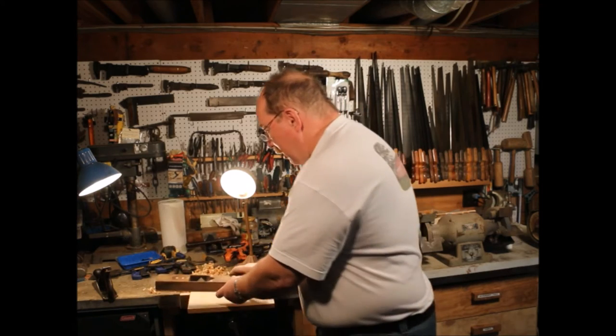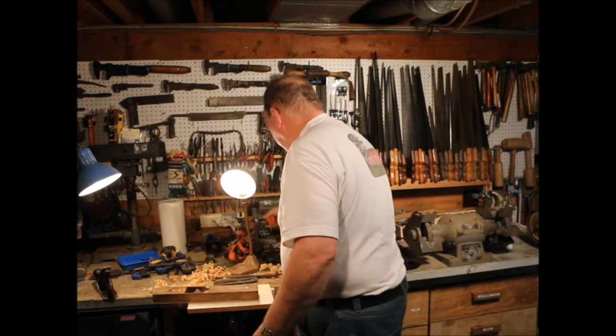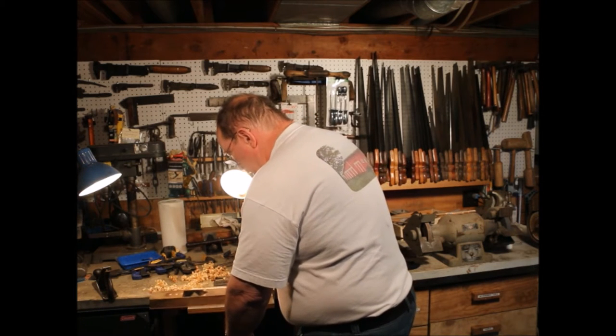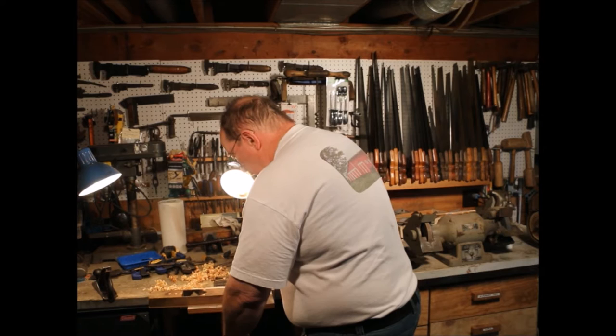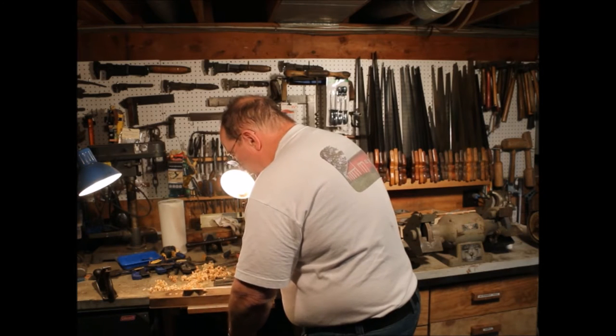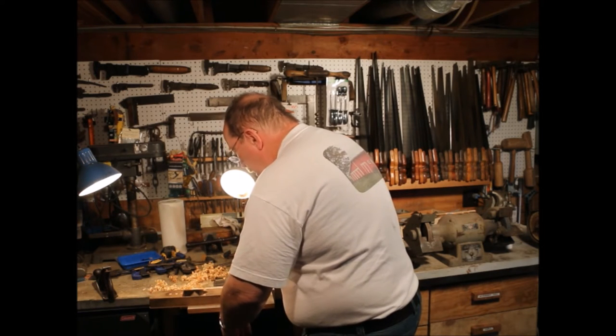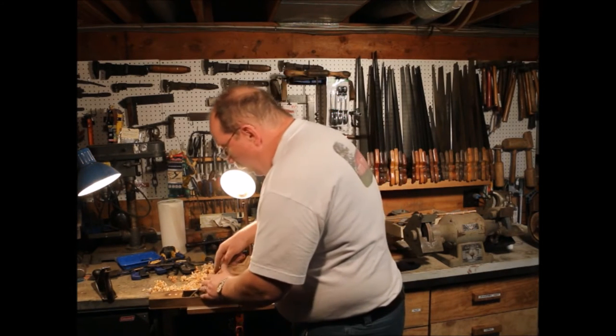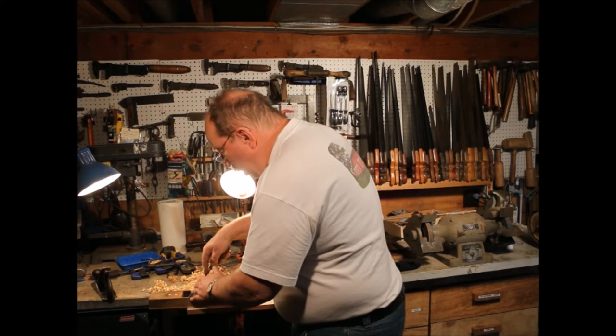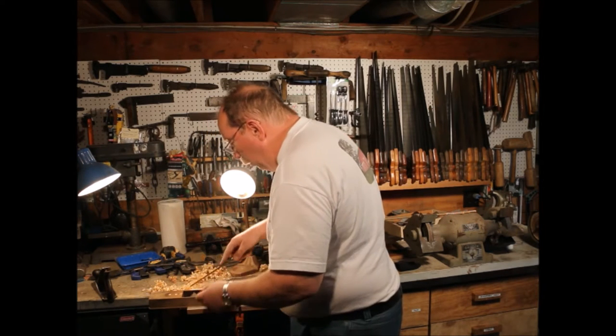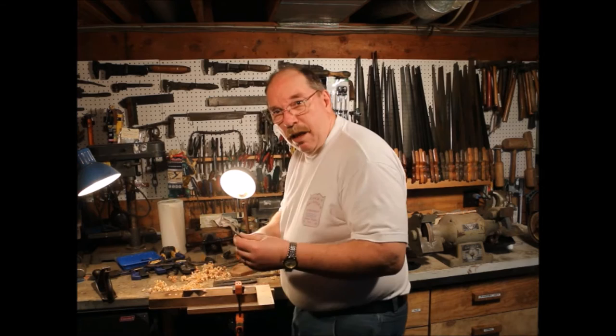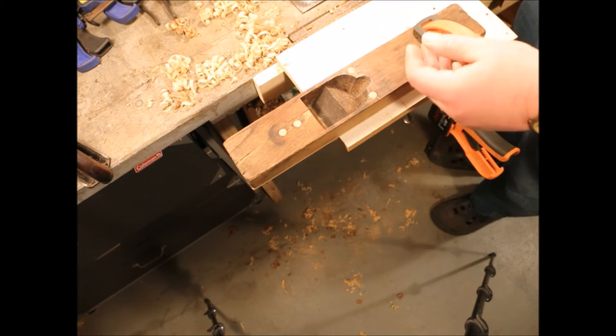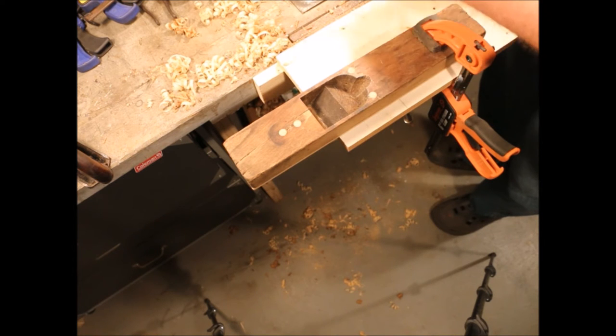To do that, clamp it down to this jury rigged fixture and use this file to go in there and open up that mouth opening. This file doesn't have any teeth on the sides, it's a safe file, so I'm going to use this thin file to go in there and open up the sides of the mouth.